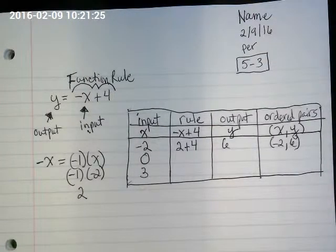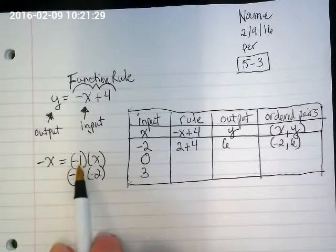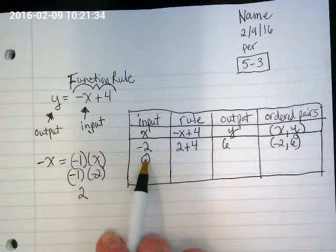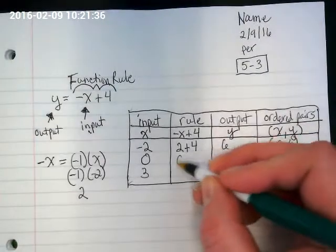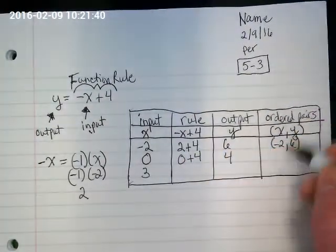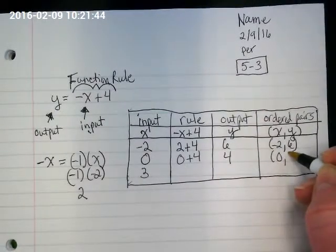What's my second one? Well, 0 is not negative or positive, but really what's happening, let's go back to this. I'm doing negative 1 times 0, and what is that going to be? 0 plus 4 gives us 4. Our ordered pair this time, 0 comma 4.